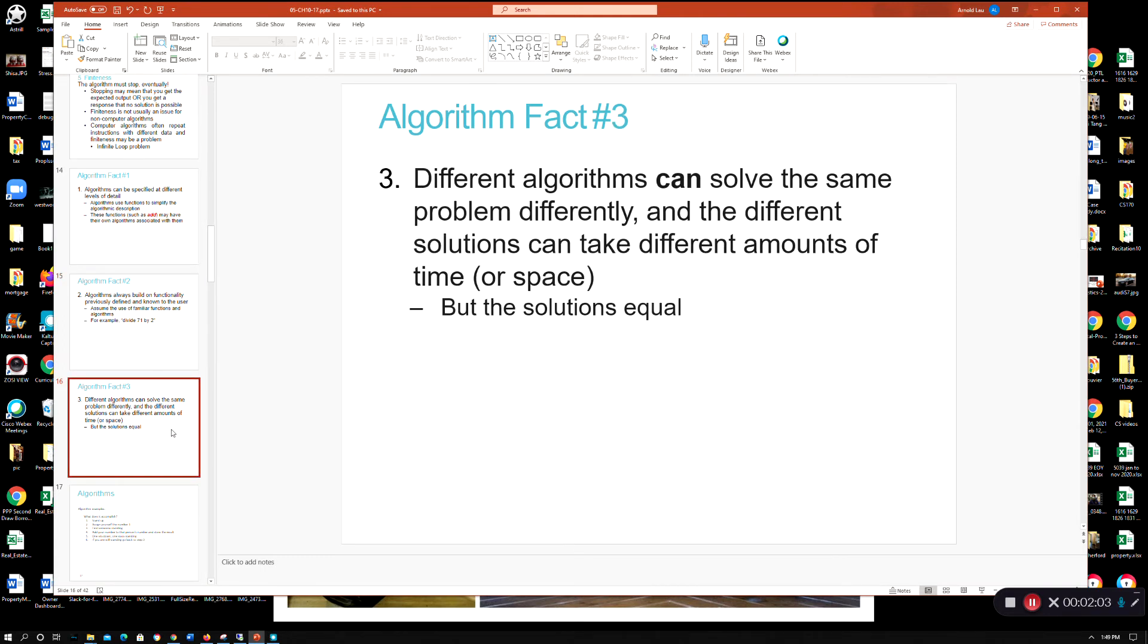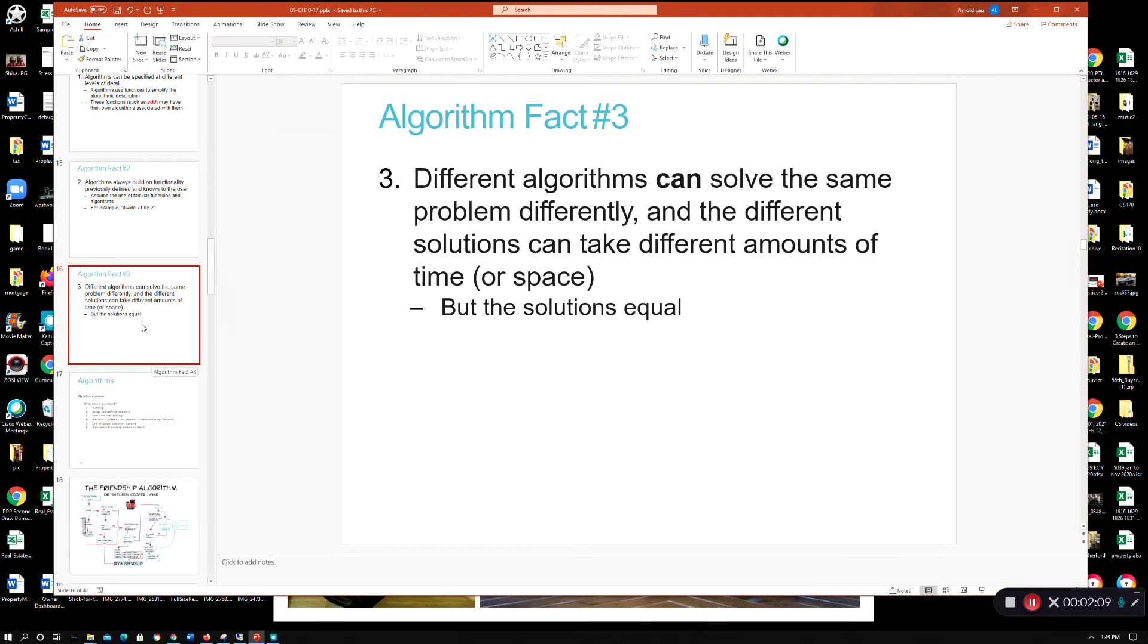This one is basically just talking about there's different ways to solve the problem. If you're looking from a computer science perspective, maybe some very common things would be different algorithms to sort a set of data - sort some numbers or sort strings and characters. There's different ways to do sorting and different ways to do searching also. The output would be the same given the same input, but how many steps or what the performance would be can vary pretty substantially.